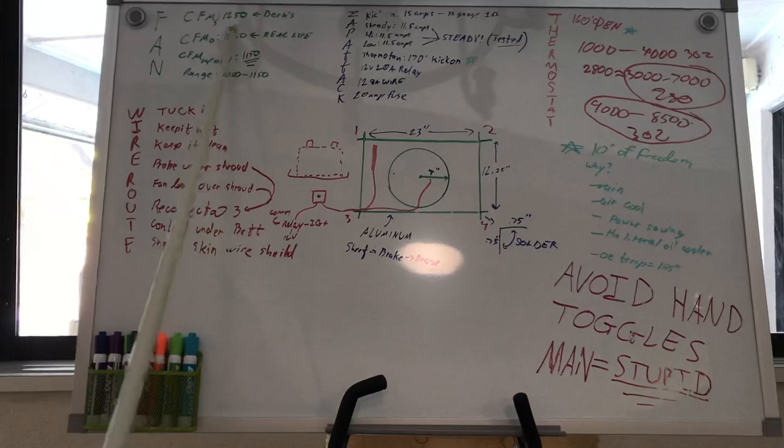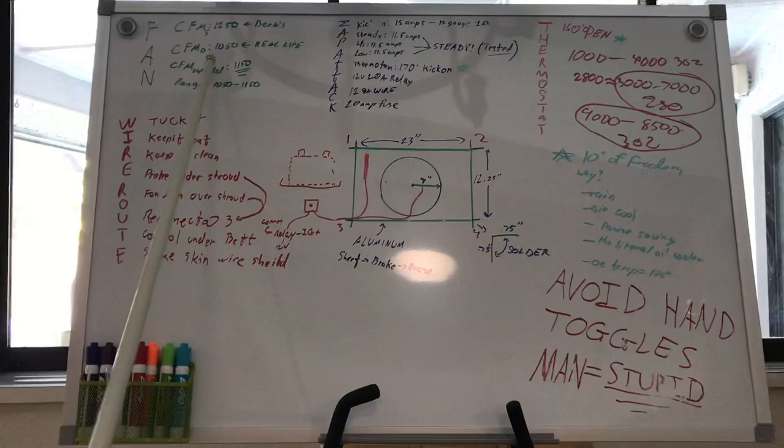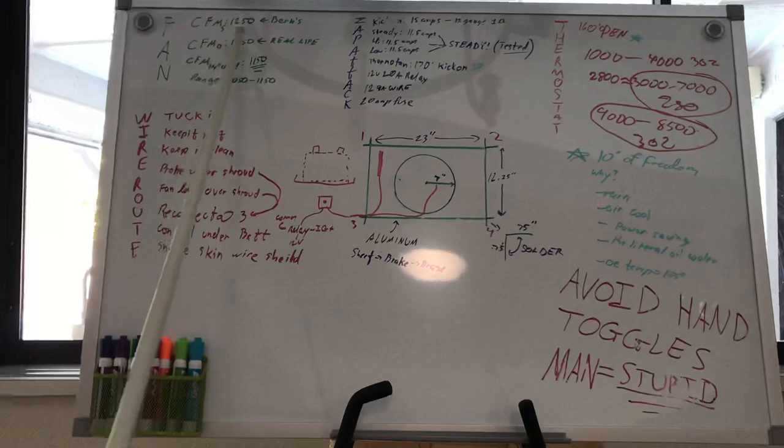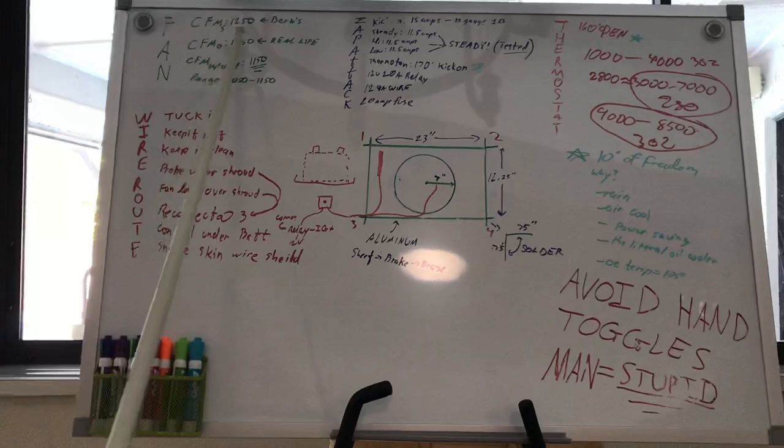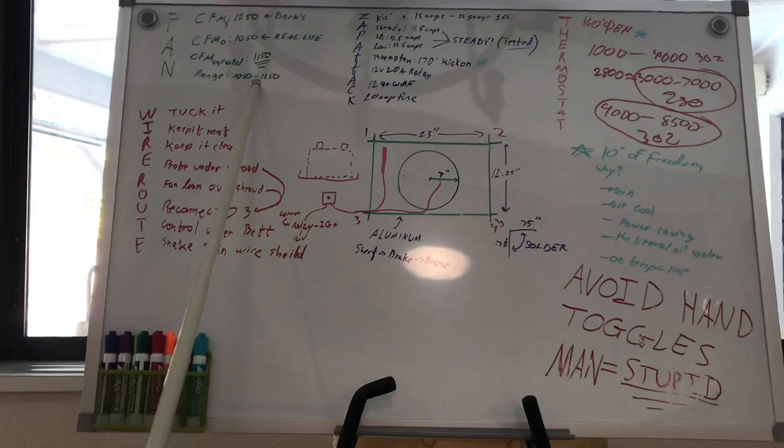In real life I always subtract 200 just because I want the worst possible scenario of CFM. So that cuts it down to 1050. So the CFM here expected is around 1150 because of course it's not going to be a reduction of 200, that's ridiculous, that's like you're flowing water or something. So the effective range of my fan that I've chosen for this situation will run is around 1050 to 1150 CFM.